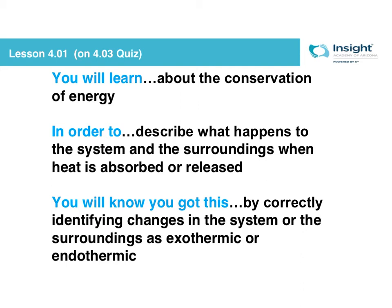We are starting on Unit 4 — after this unit we are at our halfway point in Chemistry B. This unit is all about energy. We're going to start by talking about the law of conservation of energy, which you need to be familiar with so you can describe what's going on in terms of systems and surroundings when energy is absorbed or released in chemical reactions and physical changes. You'll know you really have this down when you are able to classify things as exothermic or endothermic.